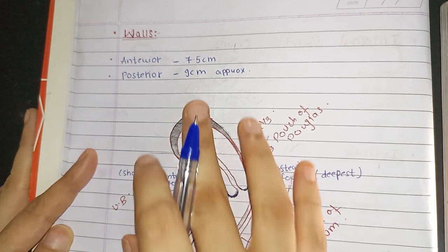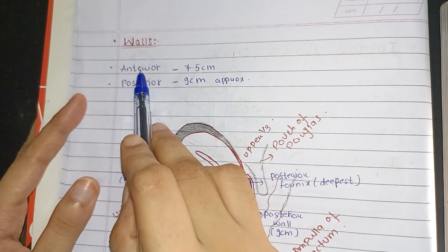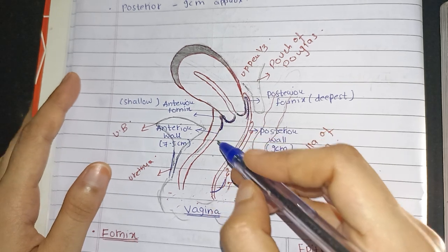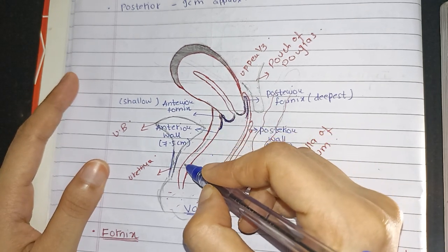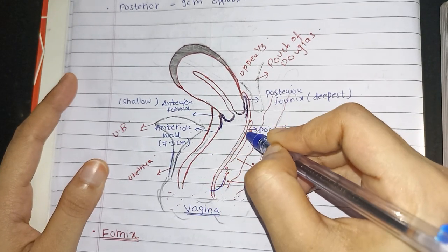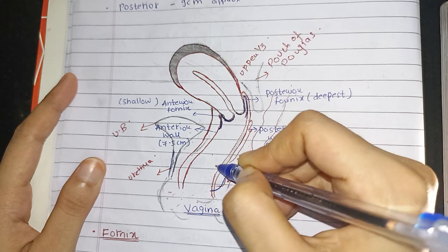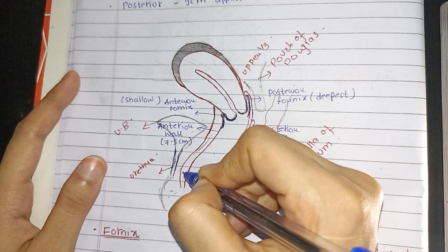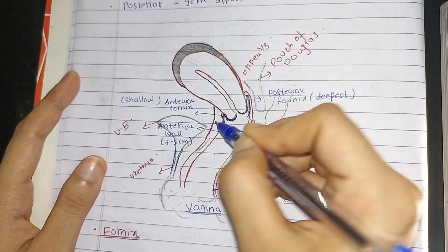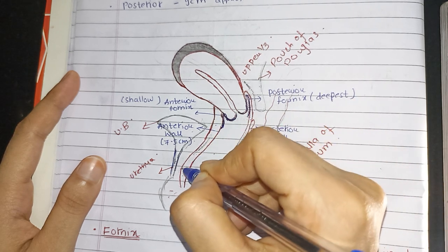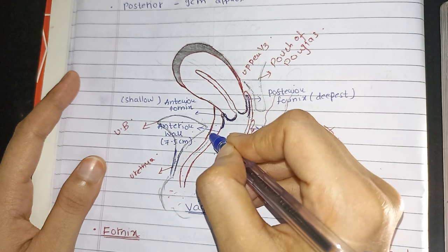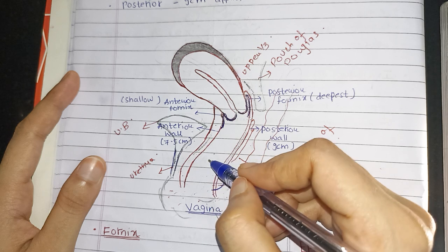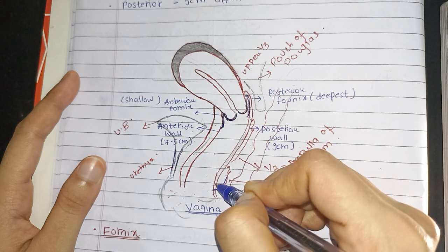Now coming to the walls of the vagina. It has two walls: the anterior wall and the posterior wall. As you can see in the diagram, the anterior wall of the vagina is smaller than the posterior wall. The anterior wall measures about 7.5 cm, whereas the posterior wall, because it is larger than the anterior wall, measures approximately 9 cm.